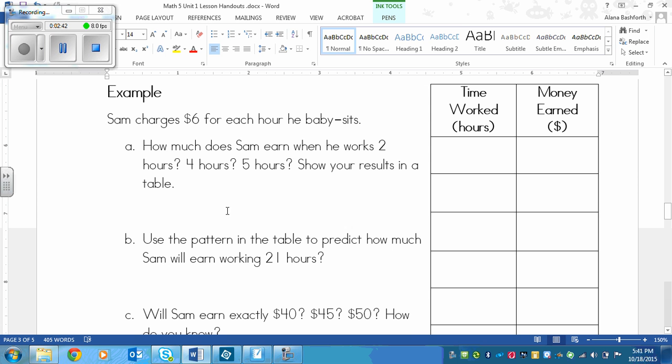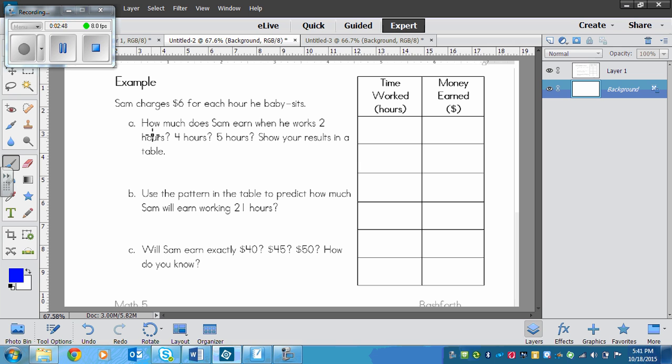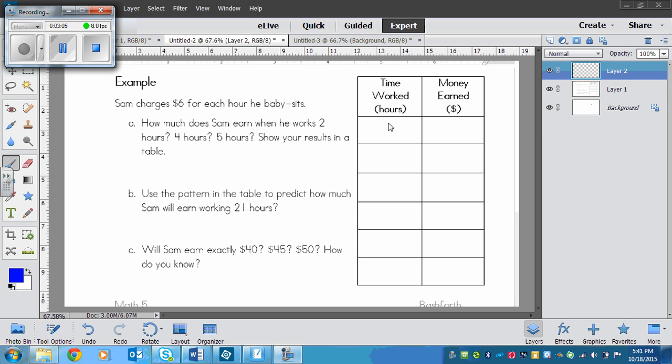How much does Sam earn when he works 2 hours, 4 hours, 5 hours? Show your results in a table. So to answer question one we've got a table and I've drawn it for you. Sometimes you'll have to draw it yourself. Time worked in hours: when he works 1 hour he gets $6 an hour.